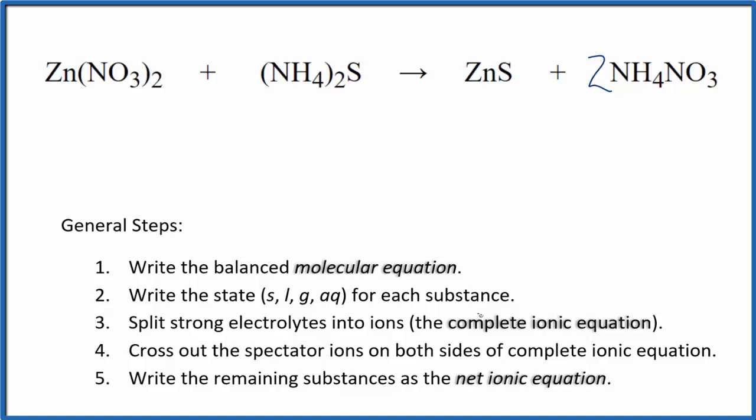Now we need to balance the net ionic equation. The first thing we'll do is write the states for each substance. So nitrates, they're very soluble, and the ammonium ion, that's also very soluble. So these compounds are all soluble. That's why we wrote aqueous.